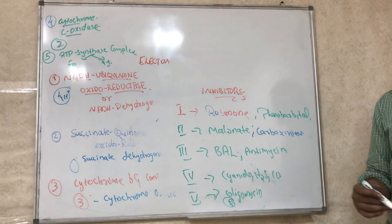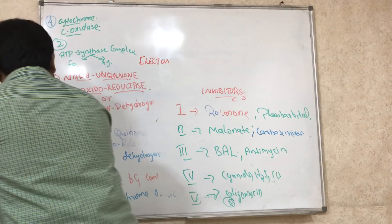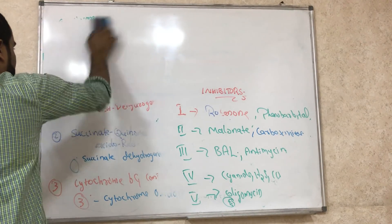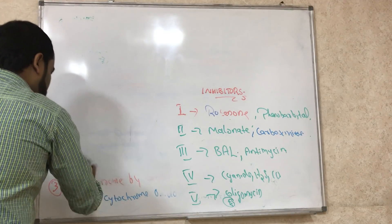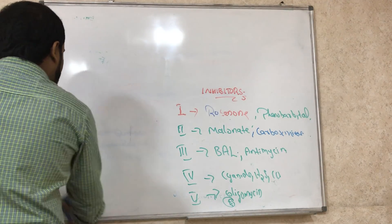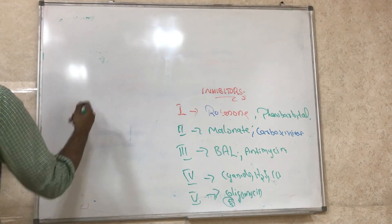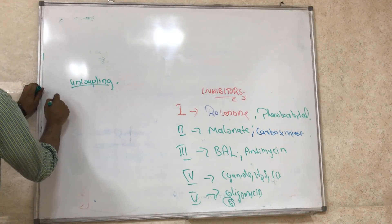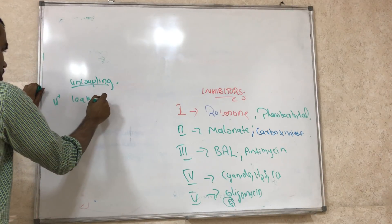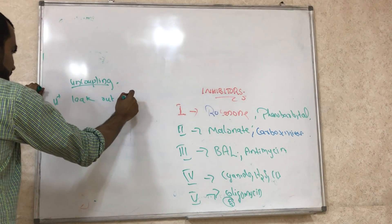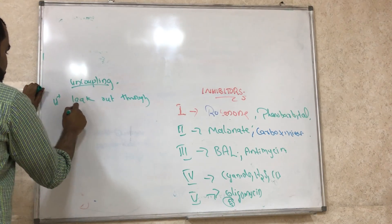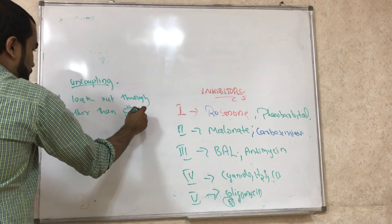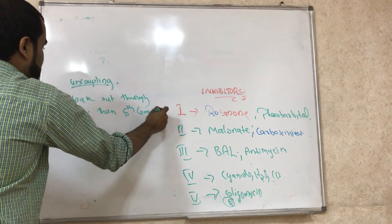Now we will study uncoupling. Normally, the H+ gradient built up in the intermembrane space passes through the fifth complex to make ATP. If H+ ions leak out through some other pathway or surface instead of through Complex V, we call this uncoupling.